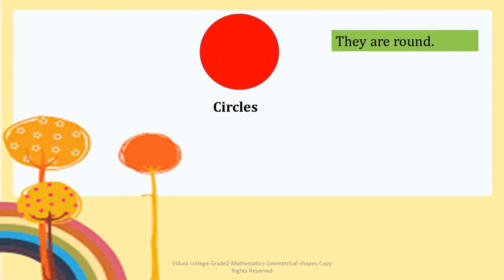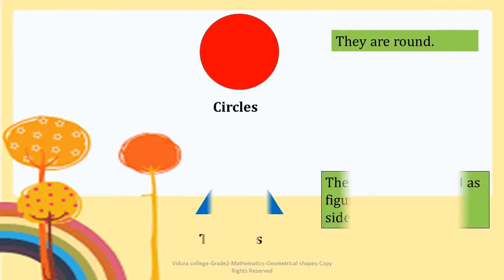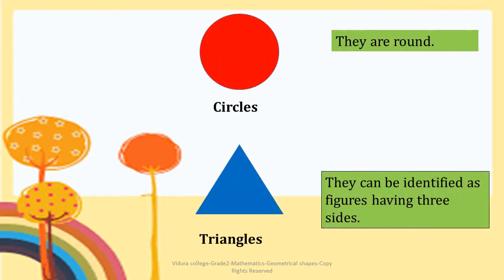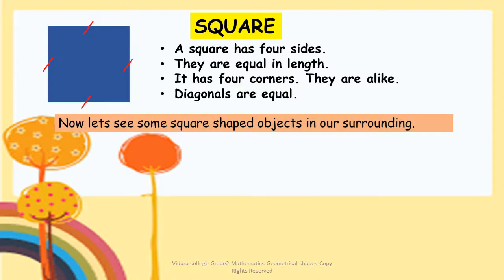Circles — they are round. Triangles can be identified as figures having three sides. Now, let's learn the shapes in detail.